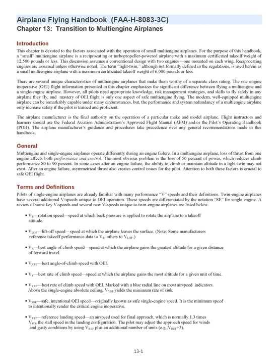Multi-engine and single-engine airplanes operate differently during an engine failure. In a multi-engine airplane, loss of thrust from one engine affects both performance and control. The most obvious problem is the loss of 50% of power, which reduces climb performance 80–90%. In some cases after an engine failure, the ability to climb or maintain altitude in a light twin may not exist. After an engine failure, asymmetrical thrust also creates control issues for the pilot. Attention to both these factors is crucial to safe OEI flight.